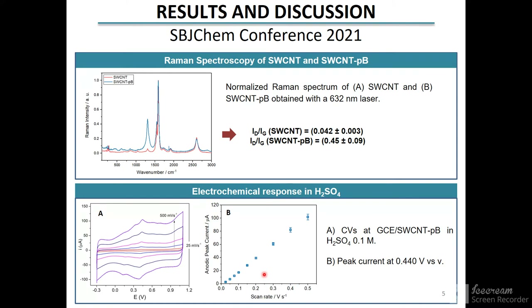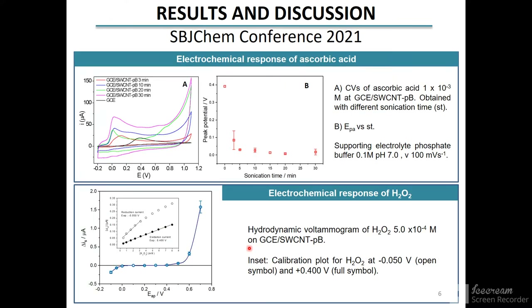This characteristic, together with the results obtained by spectroscopy, indicates that these electrochemical processes correspond to the response of carboxylic groups confined on the surface of the functionalized carbon nanotubes. The electrochemical response of ascorbic acid was analyzed at glassy carbon electrodes modified with nanotube colloidal dispersions prepared applying different sonication times.